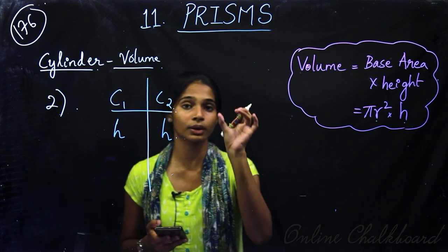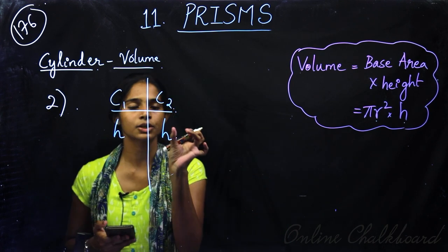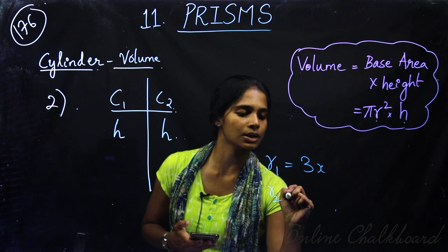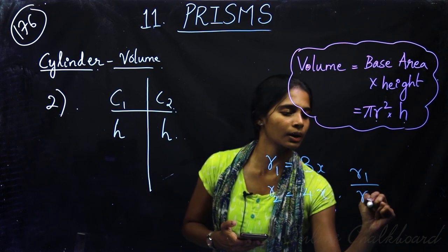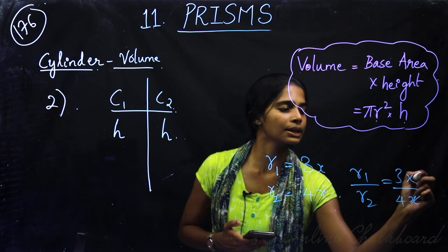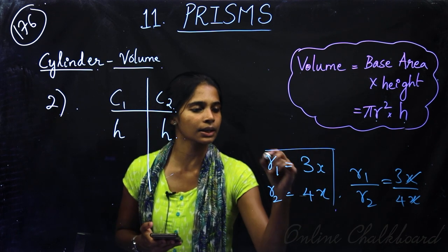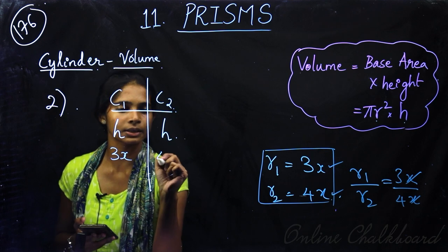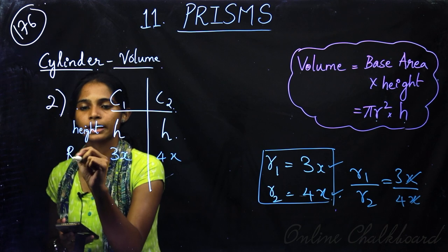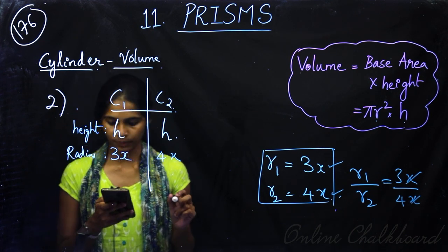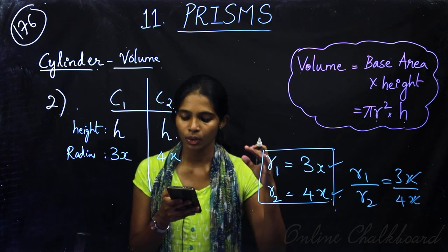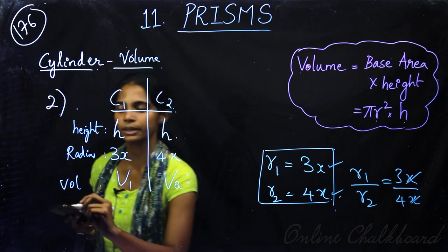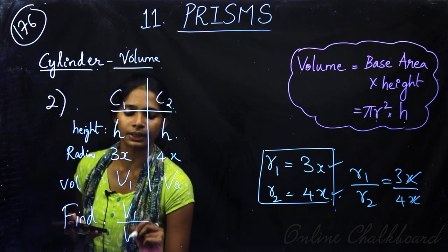Since the radii are in the ratio 3 is to 4, we can write the radius of C1 as 3x and the radius of C2 as 4x, so r1 to r2 equals 3 by 4. The height is the same for both cylinders. We need to find V1 divided by V2.